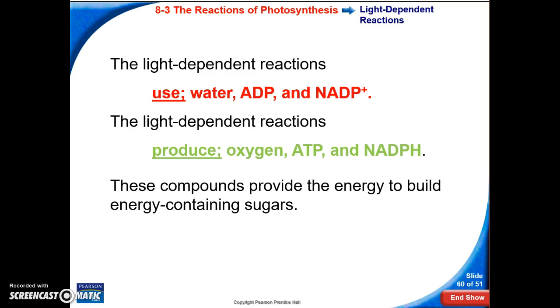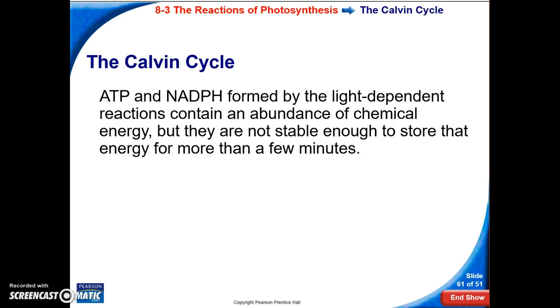The oxygen is what we breathe. The next part of photosynthesis is occurring outside of the thylakoid in the stroma of the chloroplast. In the Calvin cycle,